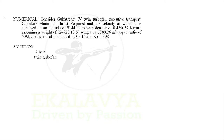The first step to solve any problem is to extract the given data from the question. We can extract the name of the aircraft as Gulfstream 4 twin turbofan aircraft. The altitude of 9144.11 meters at which the aircraft is flying is given. Usually altitude is given so that we can search for density of air at that particular altitude, but in this question they have shared the density data. We denote density as rho infinity; here rho infinity equals 0.459037 kg per meter cube.